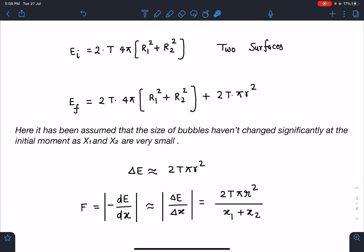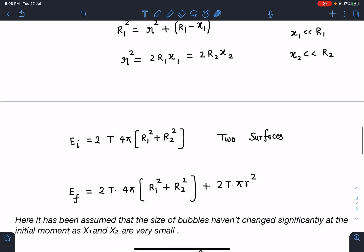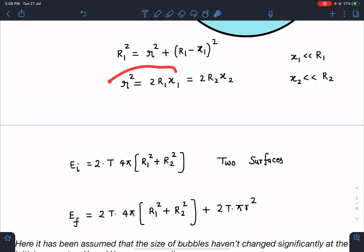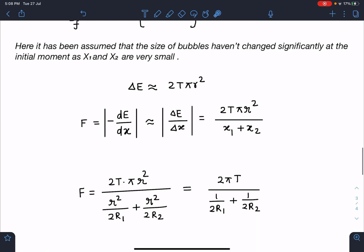Now, the change in energy divided by delta x, which is x1 plus x2 in this case. If I substitute the value of x1 plus x2, we get this expression: 2Tπr² divided by x1 plus x2. I am going to substitute values of x1 and x2 from here, so this expression will become r²/2R1 plus r²/2R2.